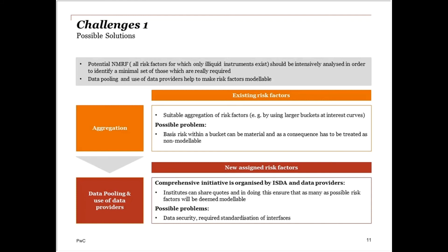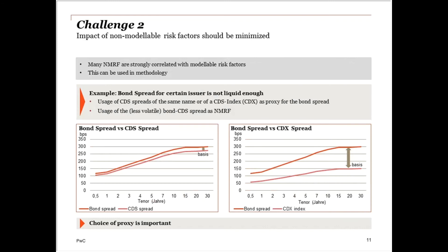Looking in more detail at the second challenge — minimizing the impact of non-modelable risk factors related to proxies — it is often observed, for example, that a bond spread can be decomposed between a proxy of same-name CDS or index CDS, which could be considered modelable, and a less volatile bond-CDS spread, which would be considered non-modelable. The choice of proxy is a key element in the minimization of the capital impact.